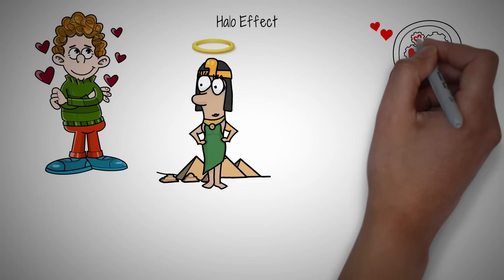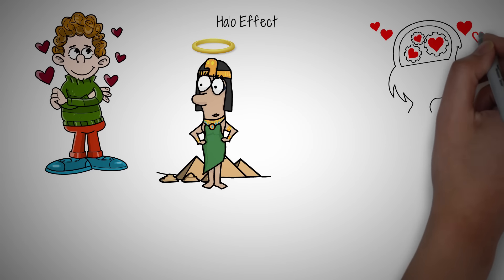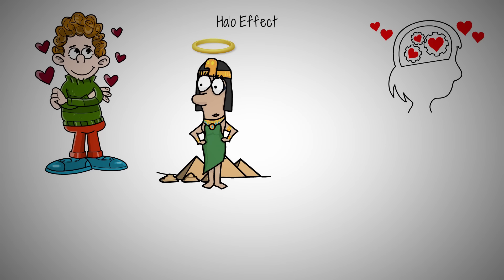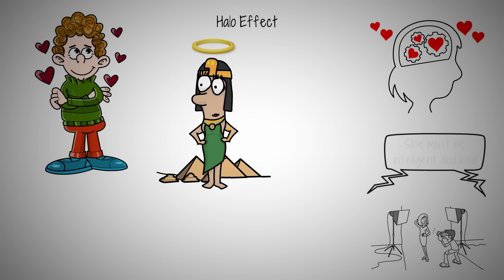The halo effect is a cognitive bias where our overall impression of someone influences how we feel and think about their character. Essentially, if we see someone as good-looking, we're more likely to attribute positive qualities to them, like intelligence or kindness, without solid evidence.